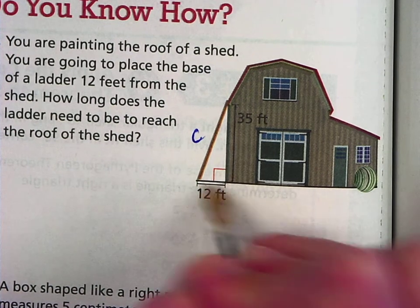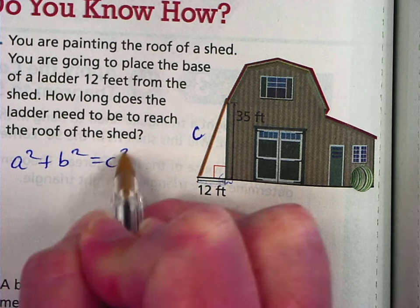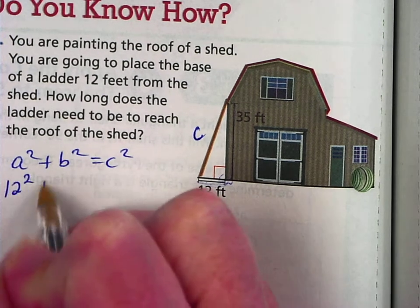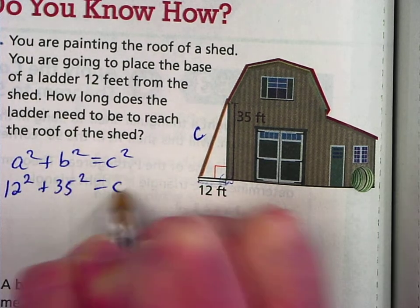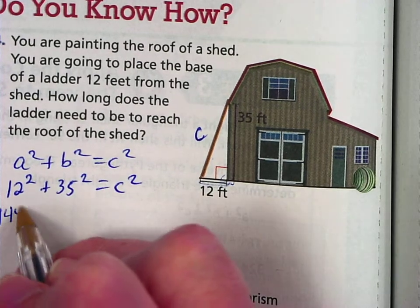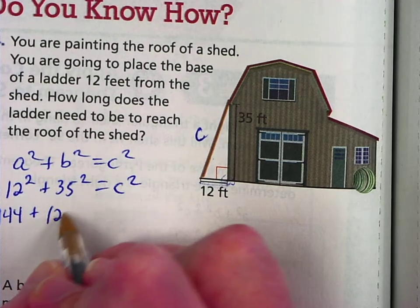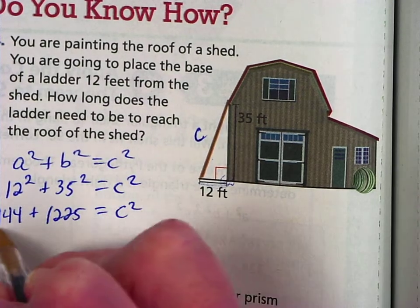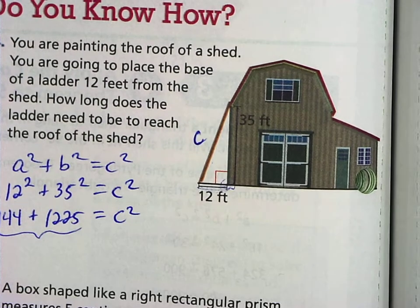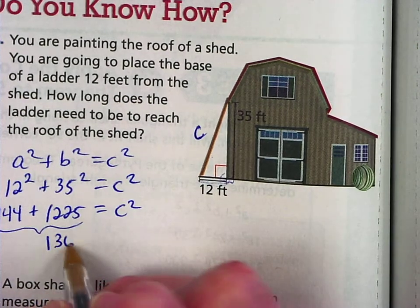You've got your legs, your A and B right here. These are connected to your right angle. So A squared plus B squared equals C squared. So we've got 12 squared plus 35 squared equals C squared. 12 times 12 is 144. 35 times 35 is 1225. Now because these are on the same side, let's add these two together. So 144 plus 1225 is 1369.